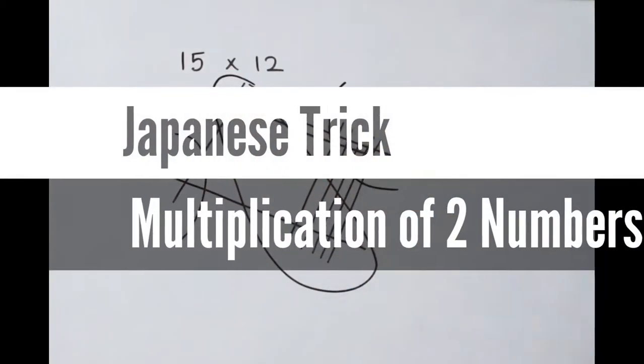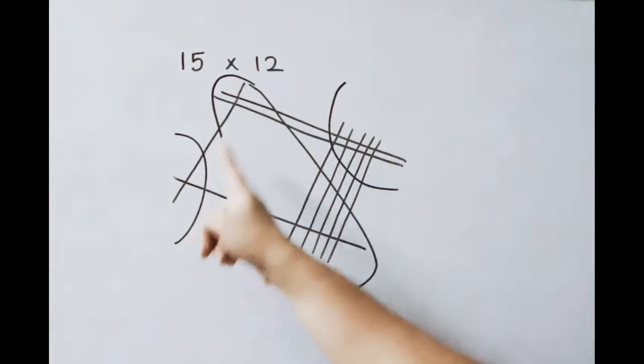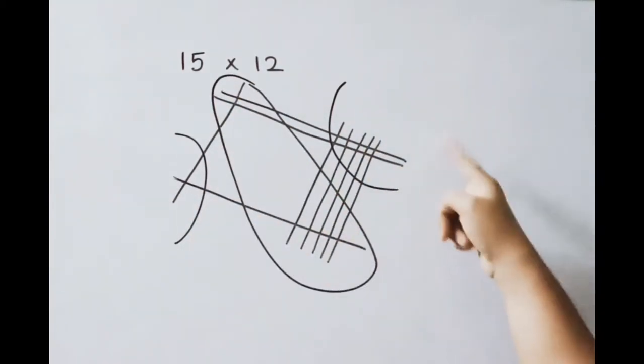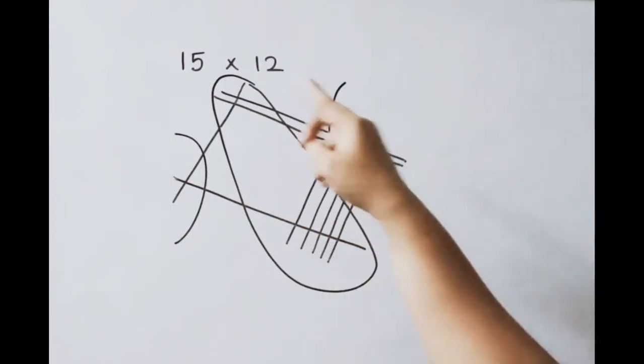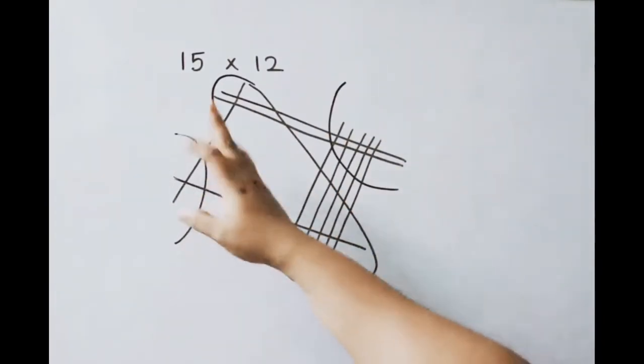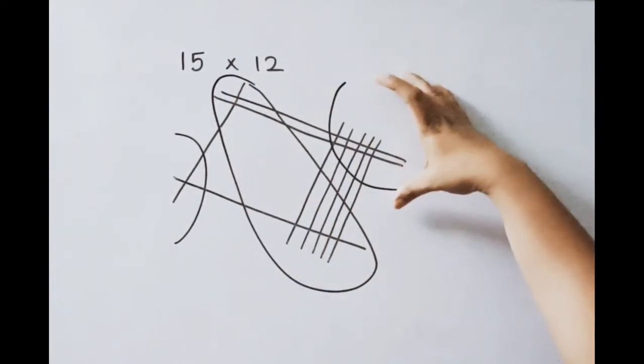15 into 12, how to multiply by using Japanese trick. For 15, draw 1 line here and 5 lines. Into 12, so draw 1 line and draw here 2 lines. This is first chapter 1 answer, this is middle part answer and this is last part answer.